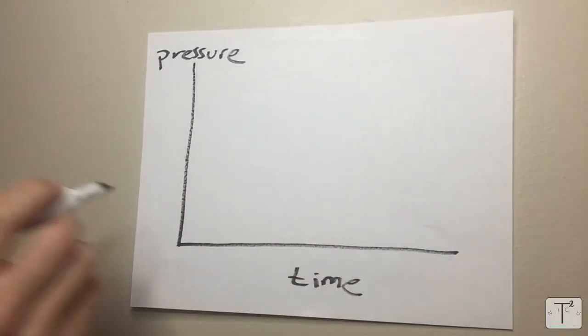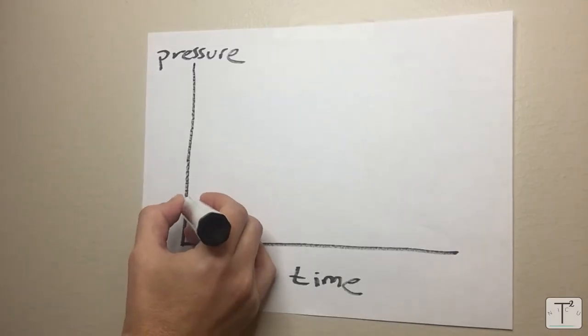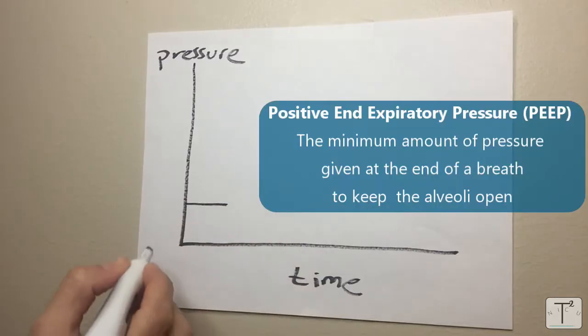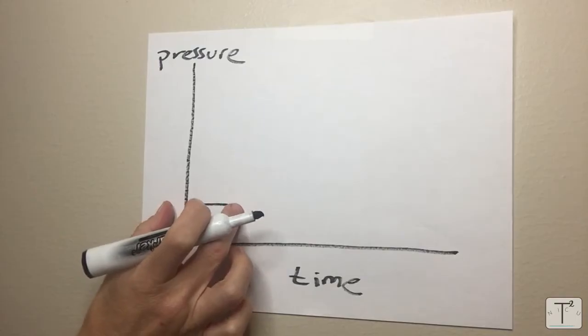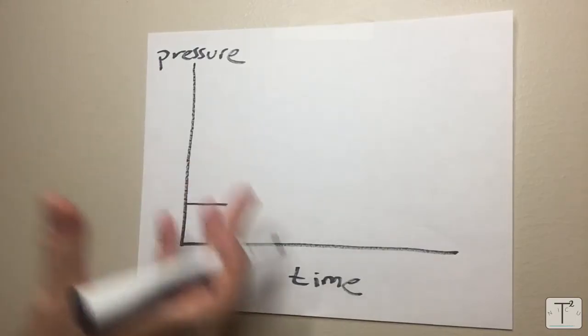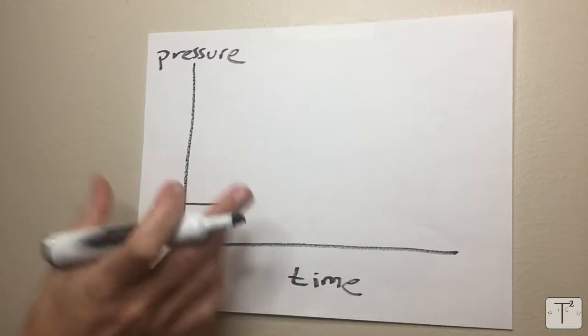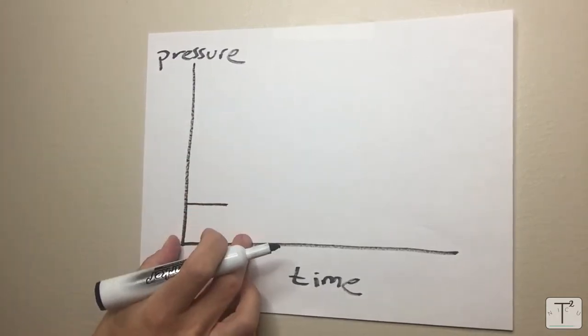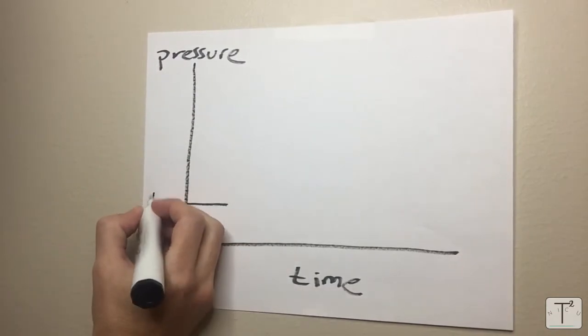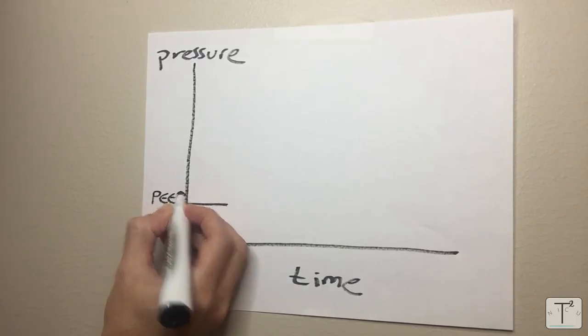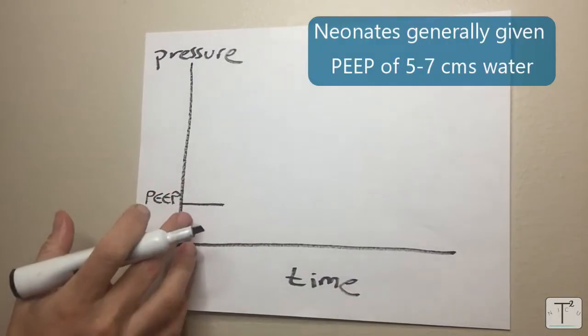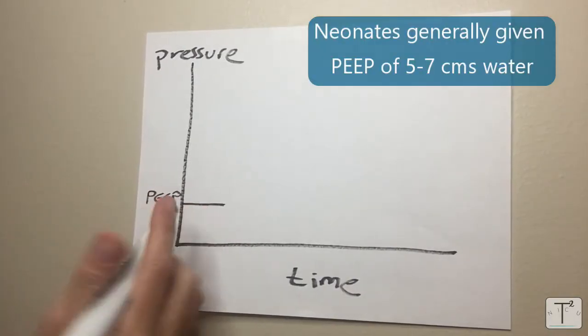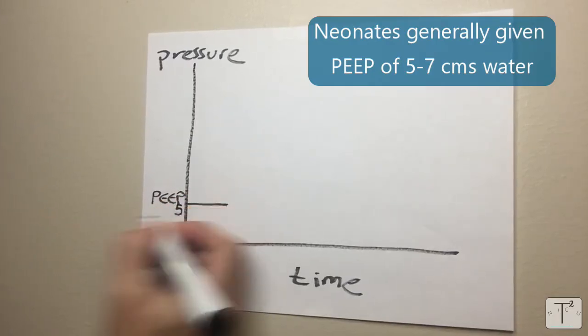As time moves forward the machine is going to give different amounts of pressure to the baby. The first thing that we have to determine is what we want our positive end expiratory pressure to be. That is the pressure that the machine gives at the end of the breath, the minimum pressure to try to make sure that the alveoli stay open. It's kind of like the functional residual capacity in a normal lung. Here let's call that the PEEP. In neonates normally we use a PEEP somewhere between five and seven centimeters of water. In this case let's assume that our PEEP is five.